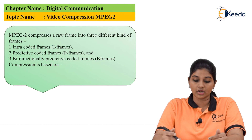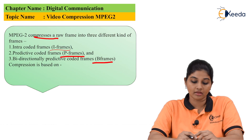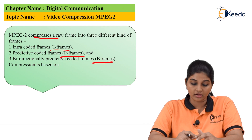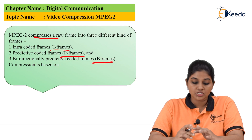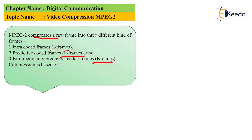MPEG-2 compression provides three different kinds of frames from a raw frame. The first is I-frame, which stands for intra-coded frame. The second is P-frame, which is the predictive coded frame. The third is B-frame, which is the bi-directional predictive coded frame. The compression is based on two methods: first is spatial redundancy, and second is time-based redundancy.